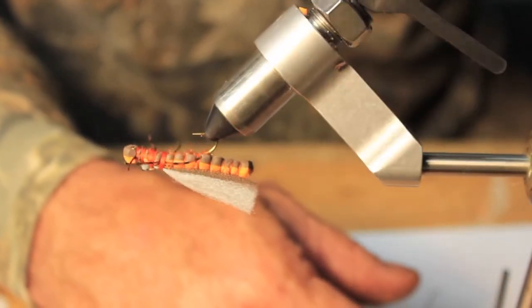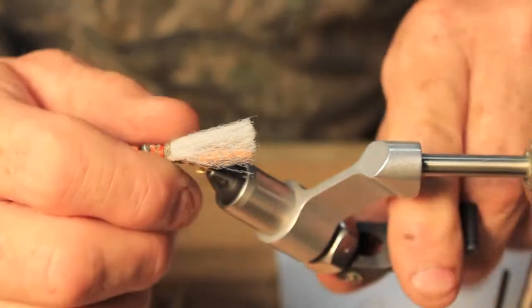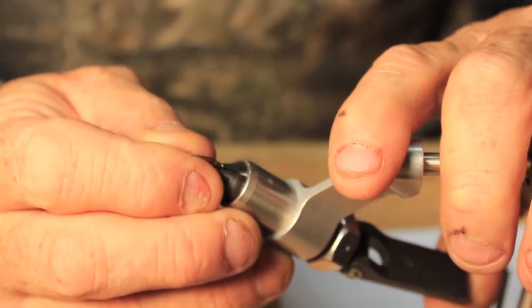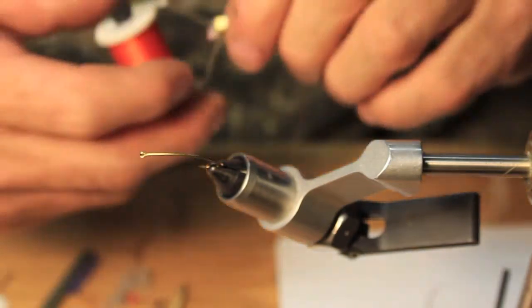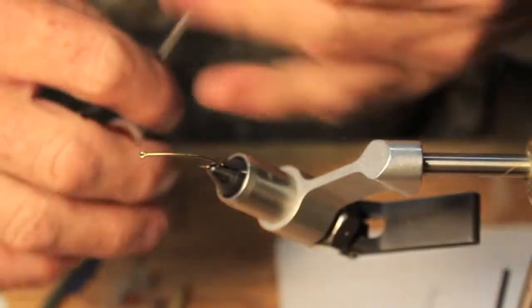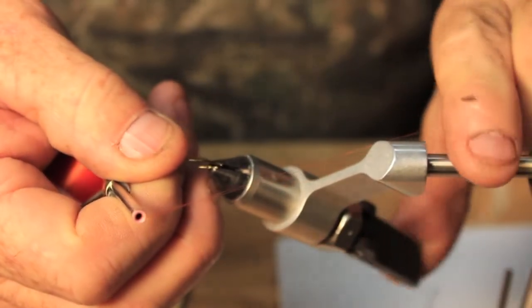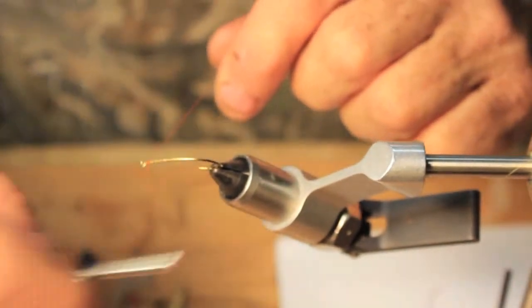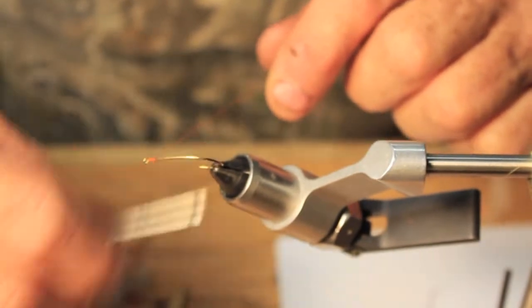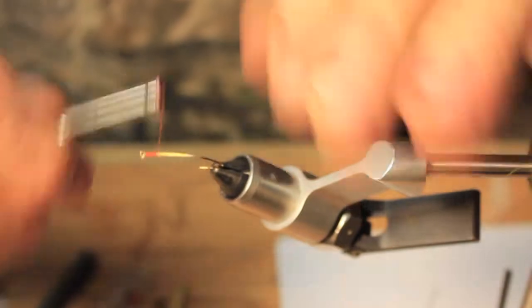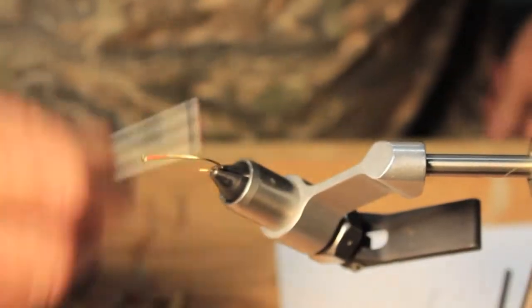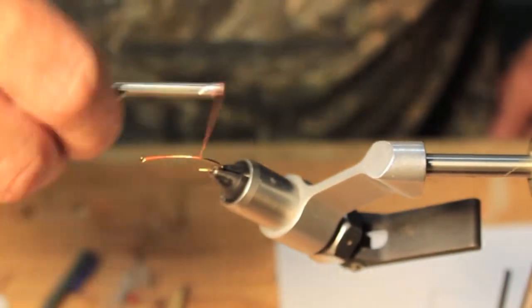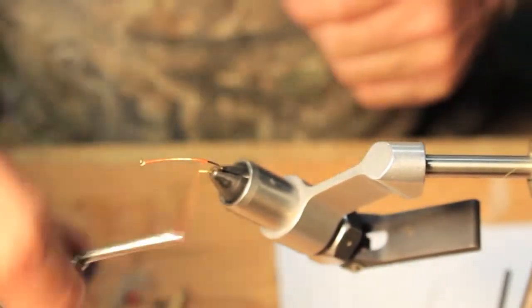First of all, we're using a number eight 3x long shank hook and an orange thread—just any orange thread. The actual color on the salmon is a little duller than this, but this seemed to work really well. We're just going to wrap our thread back. We're going to cover this up with dubbing, so I like to lay down a thread base just to give dubbing something to grab onto and keep it from sliding around once we start tying the foam bodies on.